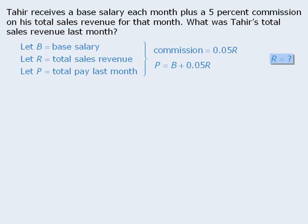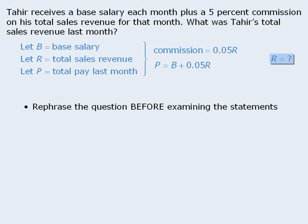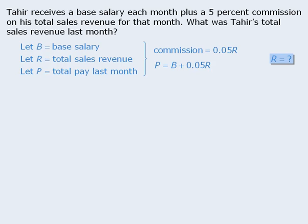Is there anything else we might do before examining the statements? In many cases, it is useful to first rephrase the target question to help us identify information in the corresponding statements that may be sufficient to answer it. We need to find the value of R. But what information would be sufficient to determine R? We already have an equation with R in it, so let's see if we can do anything with that. We can isolate R by subtracting B from both sides.